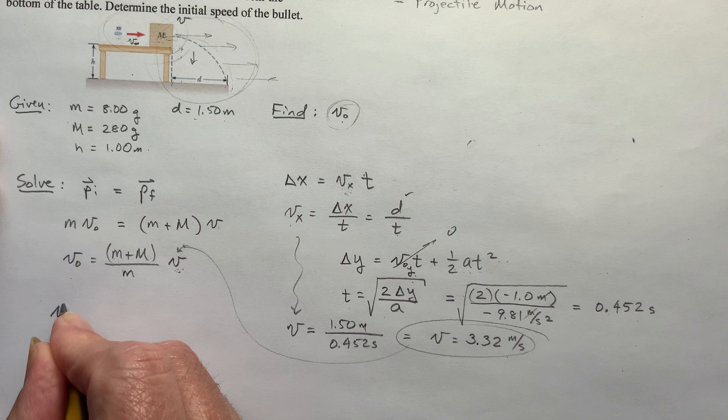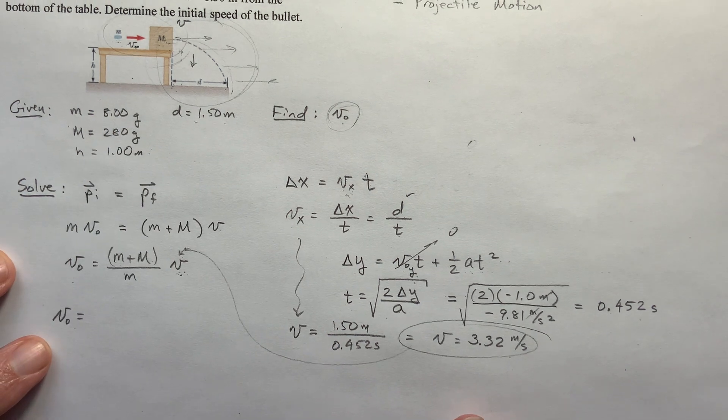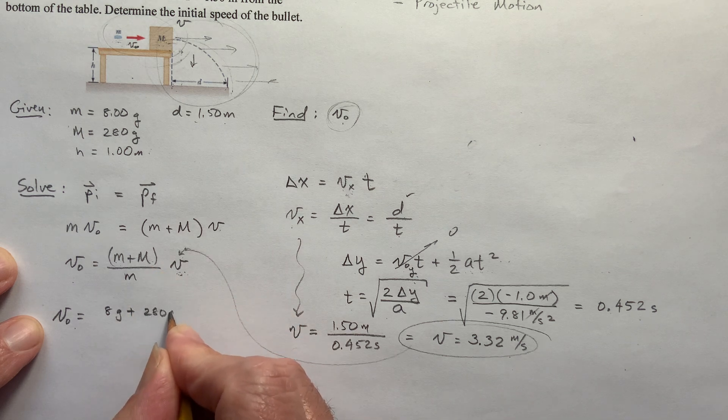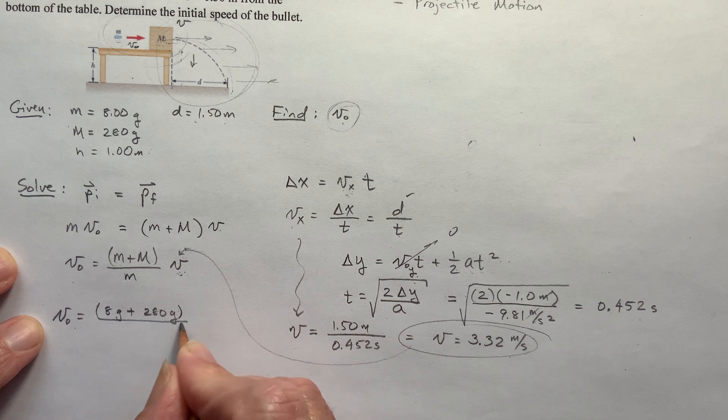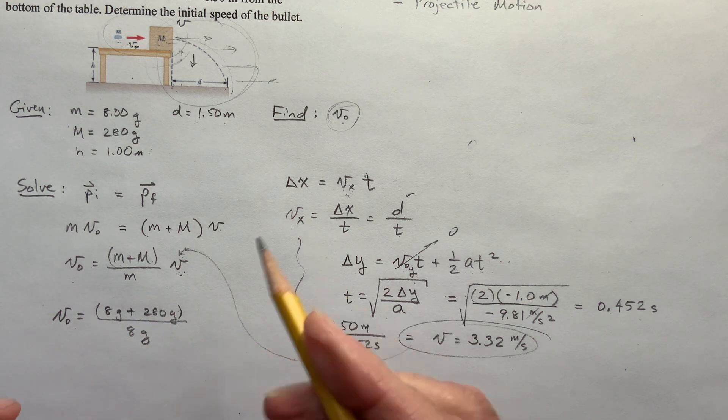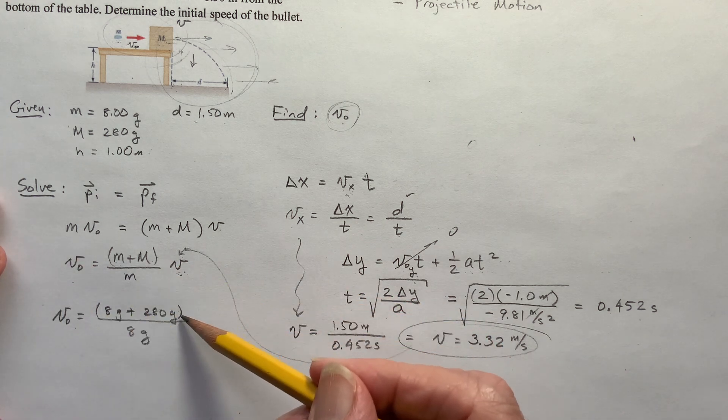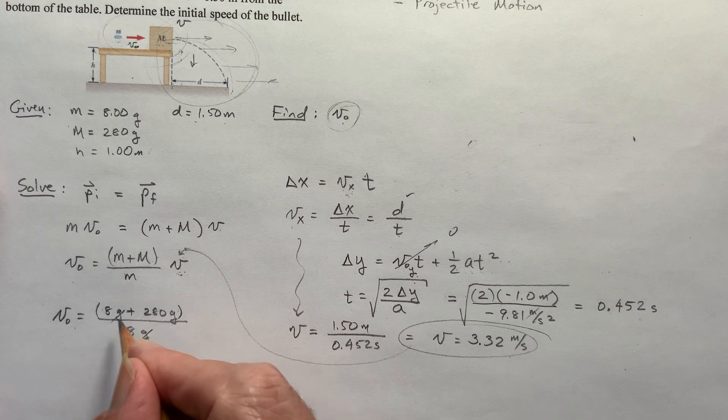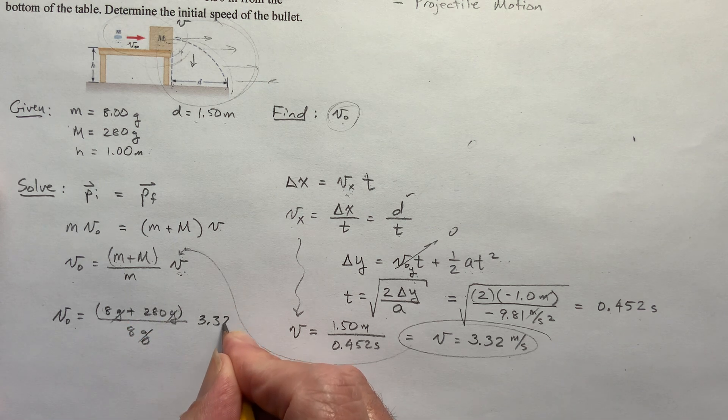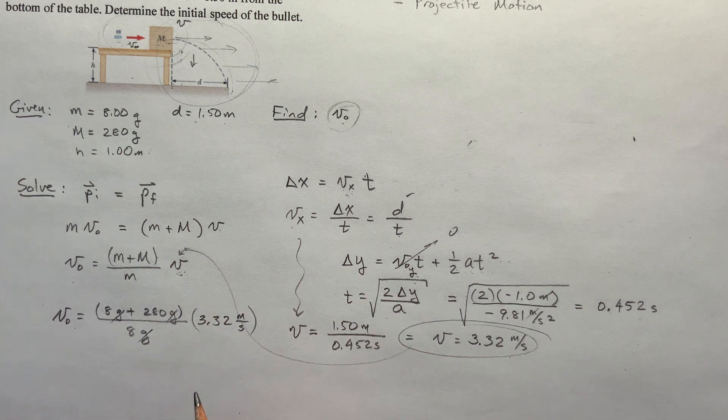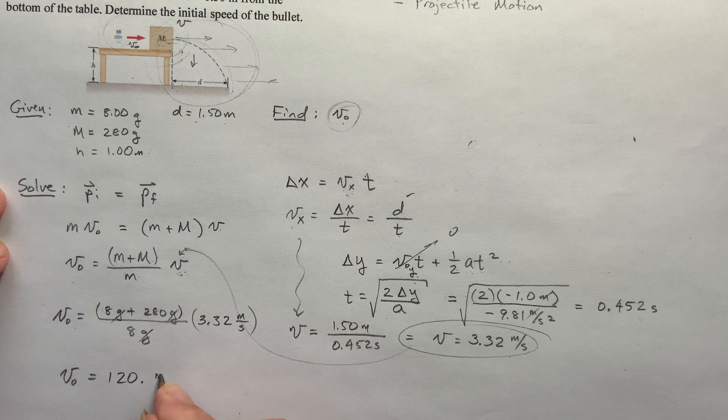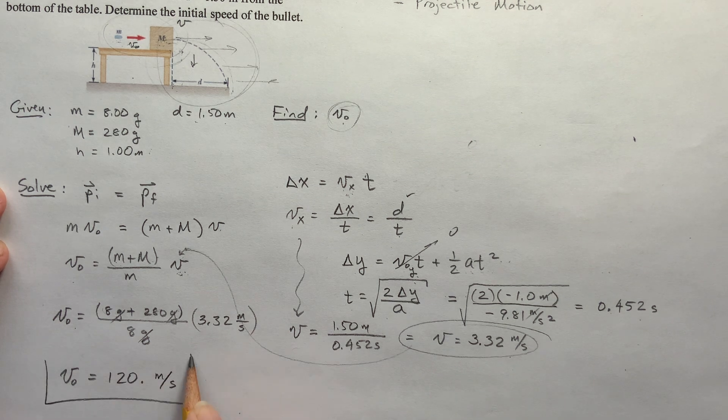So this v0 is the bullet, that's what I'm trying to find. So the mass of the bullet, this is 8 grams plus 280 grams, divided by 8 grams. You might say, well, why didn't I change to kilograms? Because I knew that if I change this and multiply or divide by 1,000, I'm also going to have to divide this by 1,000, and the conversion factor cancels out. So you can just leave it as grams, because grams cancels out. Then times this 3.32 meters per second. Put that in your calculator, and there's your answer. The initial velocity of the bullet is going to be rounded off to three significant figures, 120 meters per second. And there is the answer.